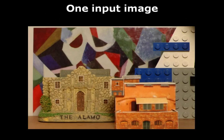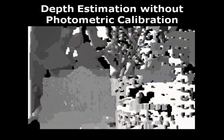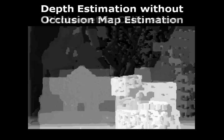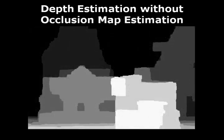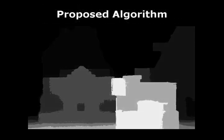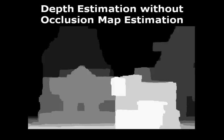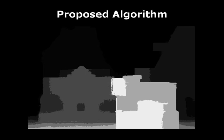Let's see a result of the post-processing algorithms. This is a depth map estimated without photometric calibration. We can see that because the intensities of a scene point are inconsistent in different images, the result is frustrating. This is a depth map obtained after performing the proposed photometric calibration, but occlusion is not taken into consideration. And this is a depth map obtained from the proposed algorithm. We can see the improvement around the depth discontinuities.